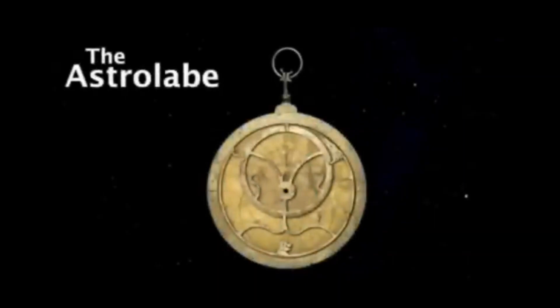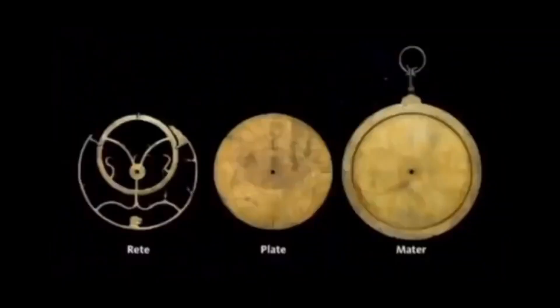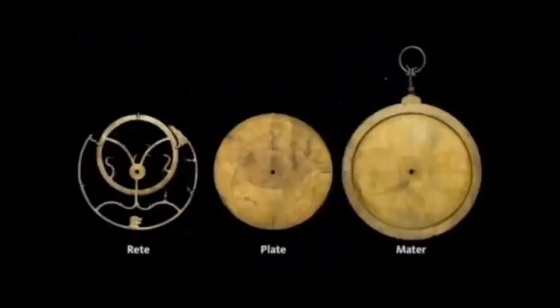An astrolabe is relatively unknown in today's world, but at the time, in the 13th century, it was the gadget of the day. It was the world's first popular computer, and it was a device that, in fact, is a model of the sky. The different parts of the astrolabe: the rete corresponds to the position of the stars, the plate corresponds to a coordinate system, and the mater has some scales and puts it all together.